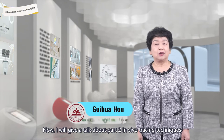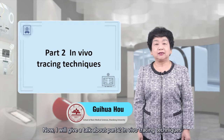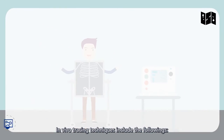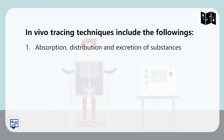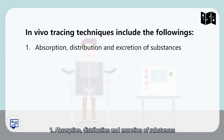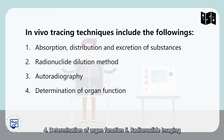Now I will give a talk about part two: in vivo tracing techniques. In vivo tracing techniques include the following: 1. Absorption, distribution, and excretion of the substance. 2. Radionuclide dilution method. 3. Autoradiography. 4. Determination of organ function. 5. Radionuclide imaging.